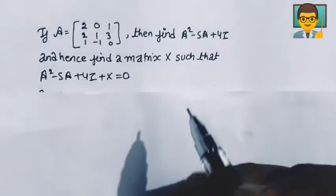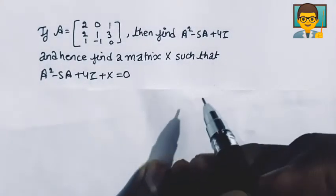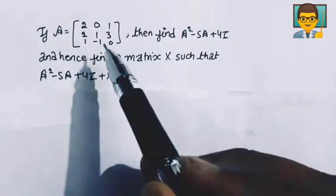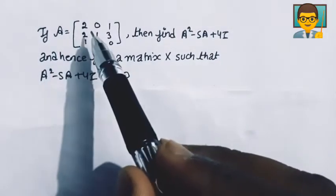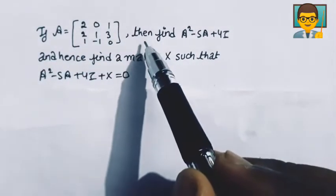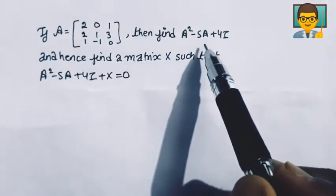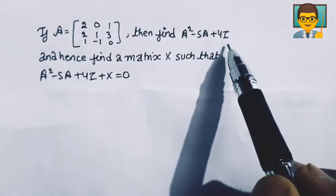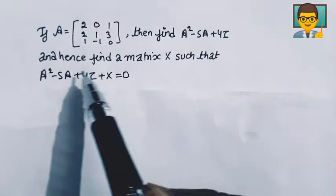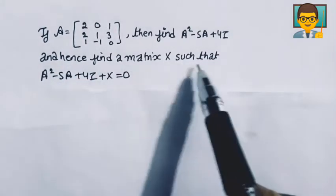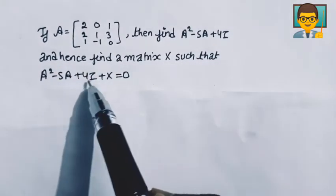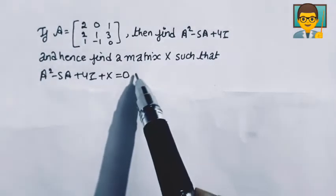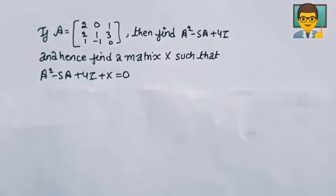Hello friends, welcome back. Now discussing another problem of matrices. Here, if a matrix A has these elements, then find the value of A² - 5A + 4I (identity matrix). And hence find a matrix X such that A² - 5A + 4I + X equals zero. It's a zero matrix.